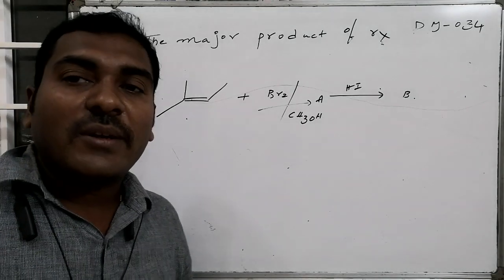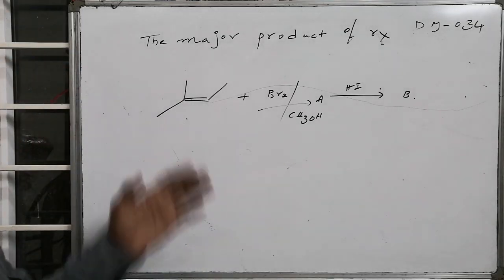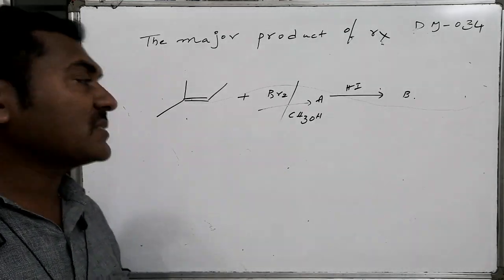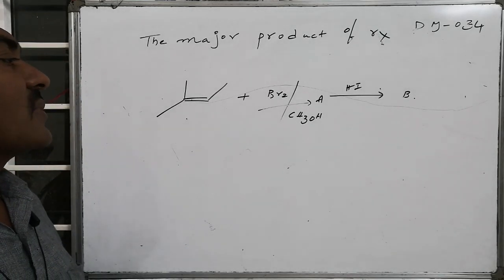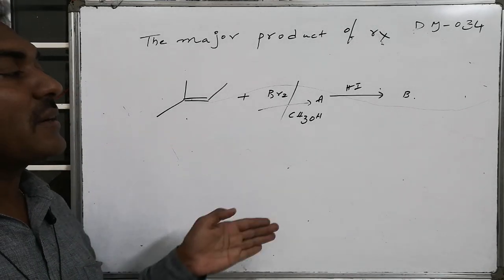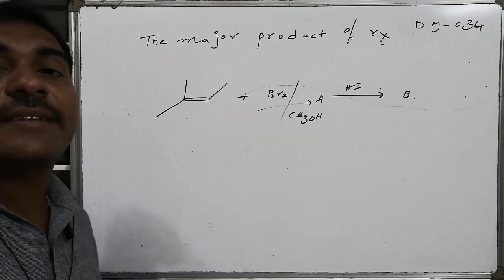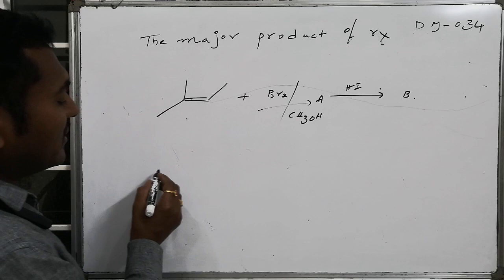The major product of the following transformation is: an alkyne system is allowed to react with bromine in presence of alcohol as solvent, forms compound A. On that A, HI is added as a result it forms B. You are asked to find what is B. Bromine in presence of alcohol means bromine is present in the form of Br+ and Br-.